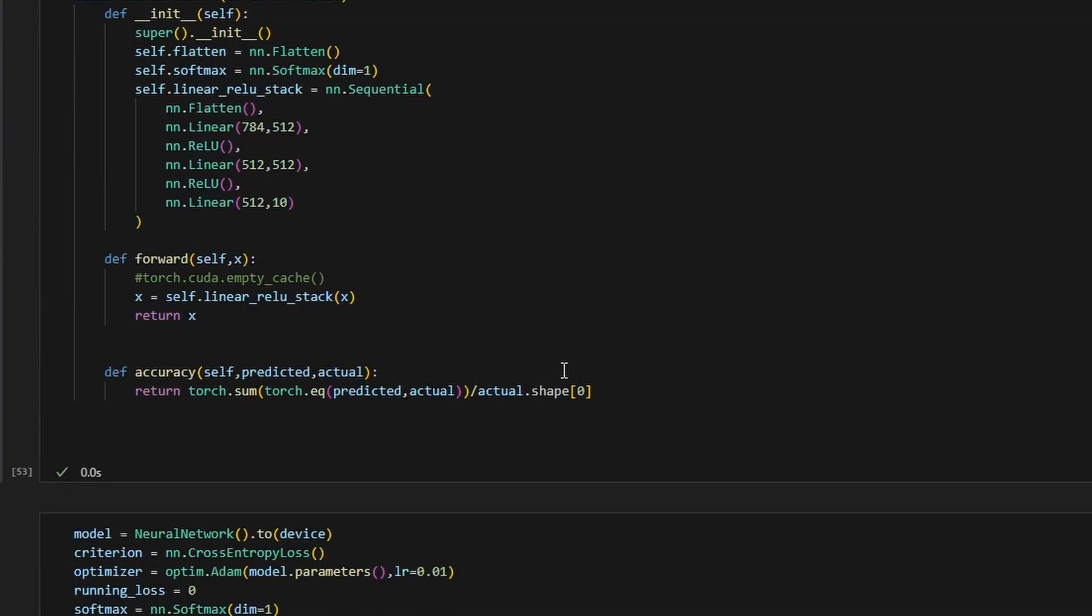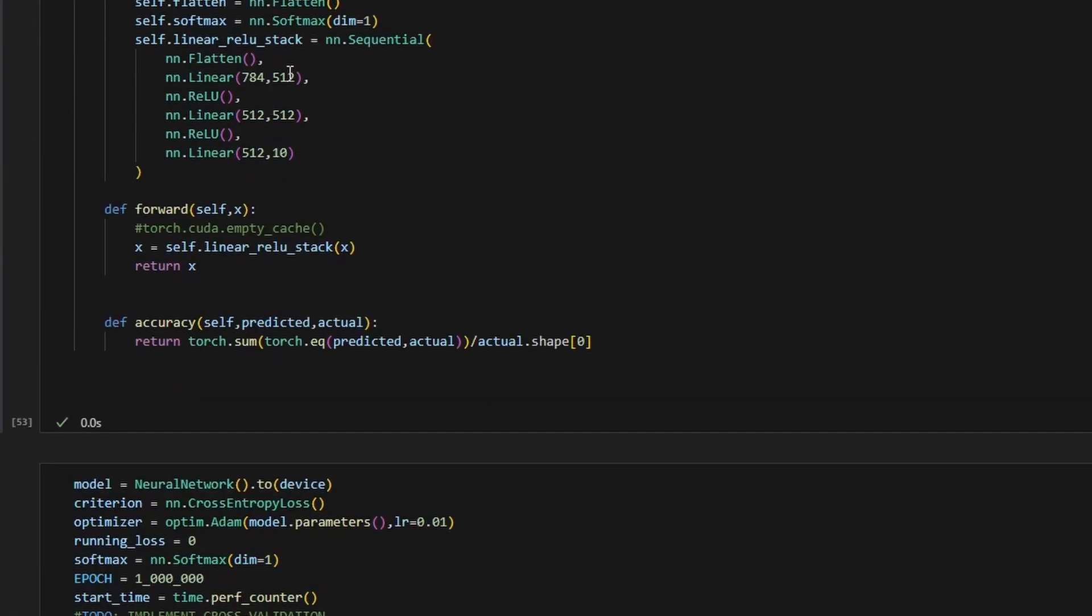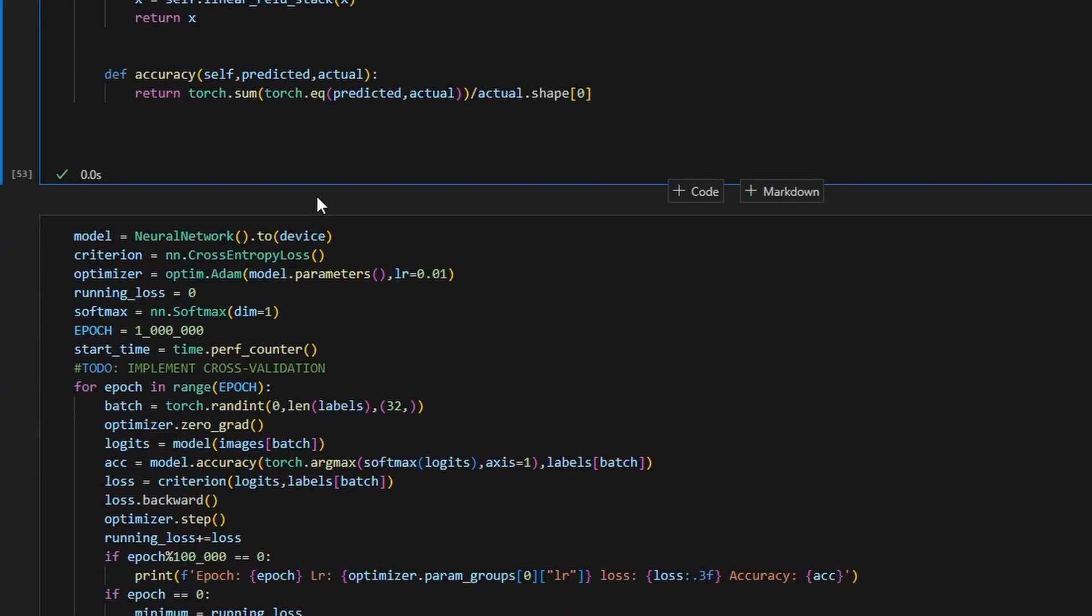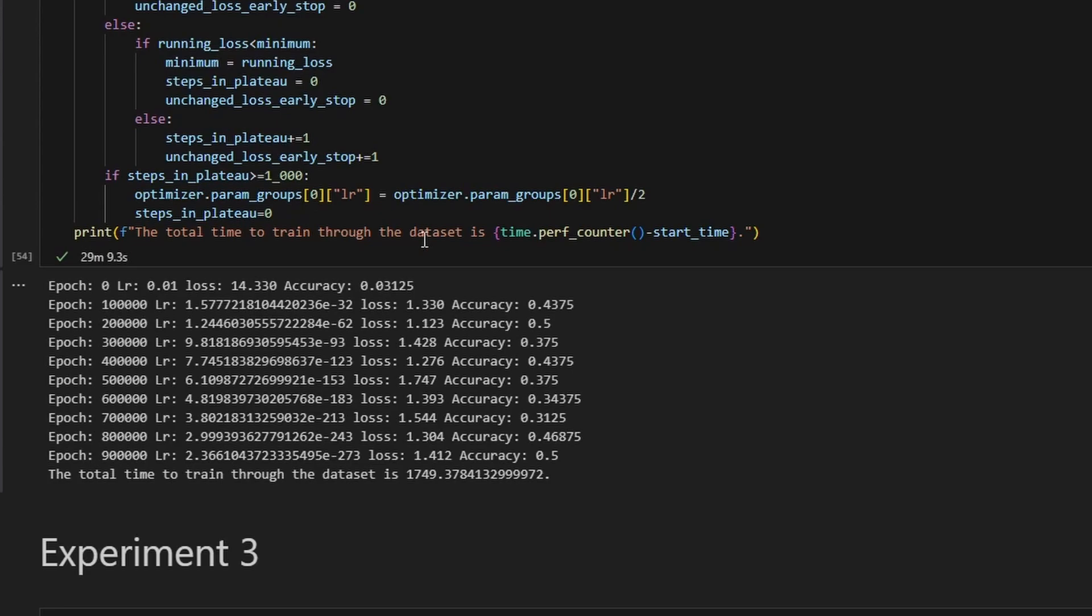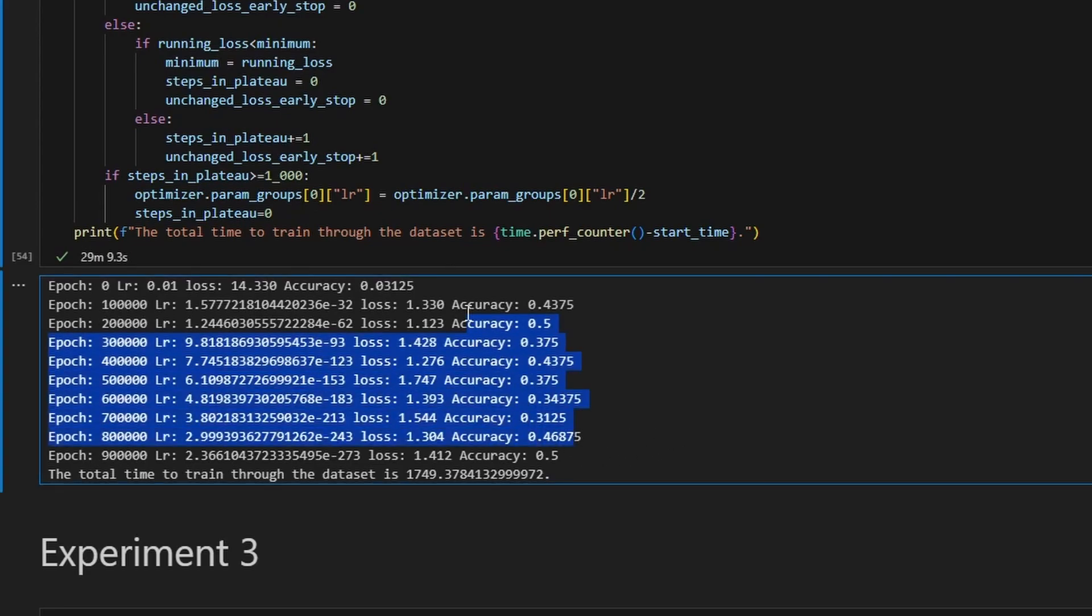But for experiment two, to spice it up a little bit, 512 neurons, one hidden layer, we're getting crazy. And then the usual 512 to 10 classes. This model did worse, surprisingly.